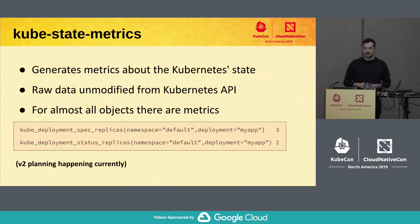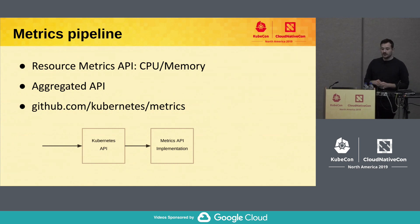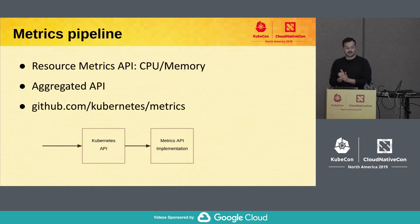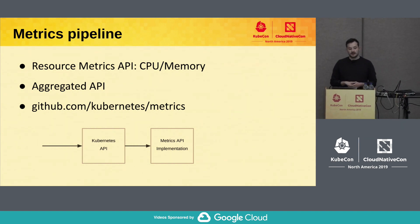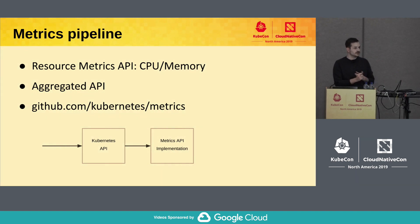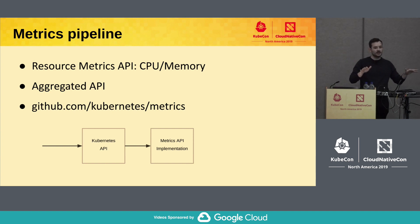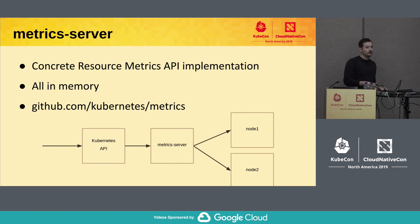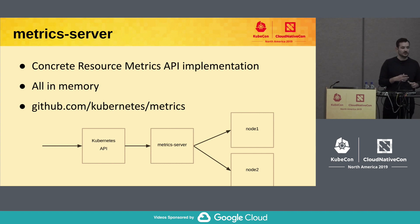There is an umbrella issue where we track all the work to move forward to the next major version of kube-state-metrics — that's a really cool way to get involved. Another thing we defined is the metrics pipelines — sometimes called the core metrics pipeline or resource metrics pipeline — which is really just about CPU and memory. If you do kubectl top, that's exactly what we defined here, including the general API for this as well as a concrete implementation.